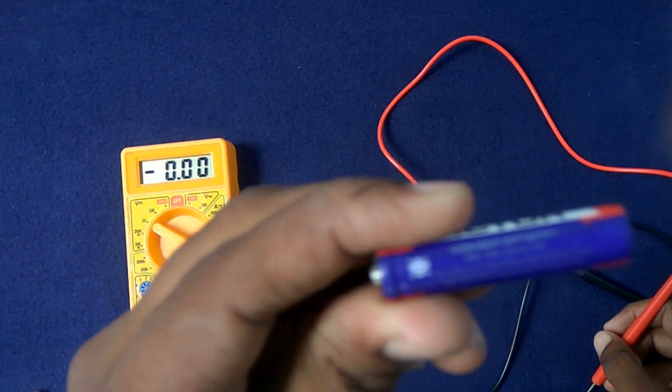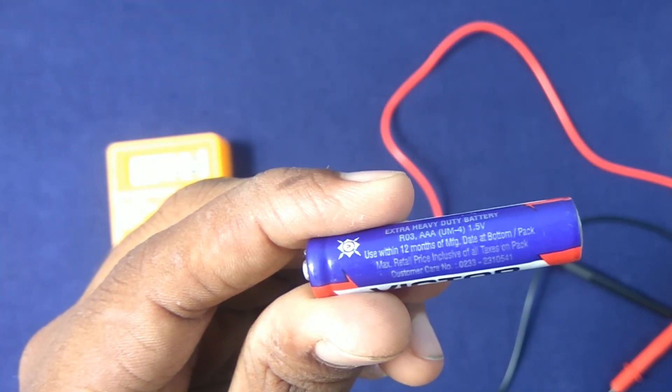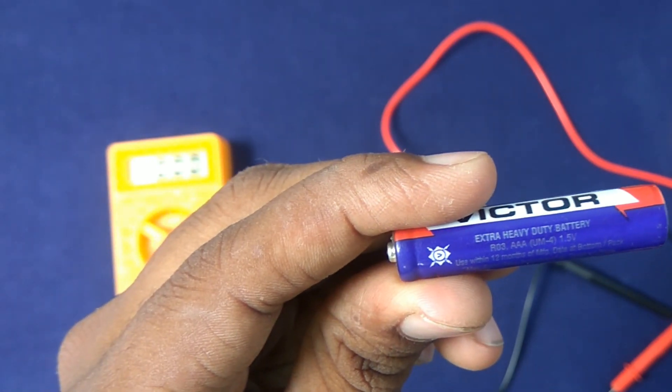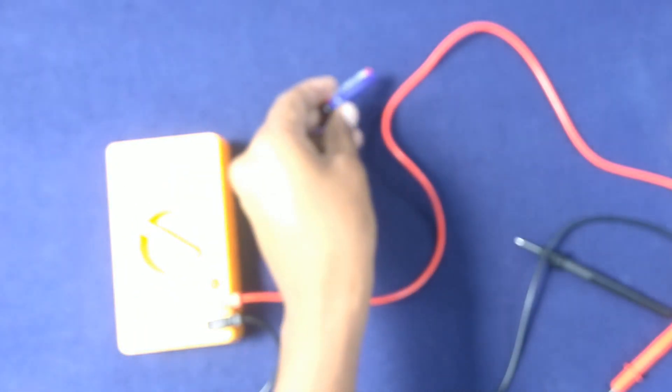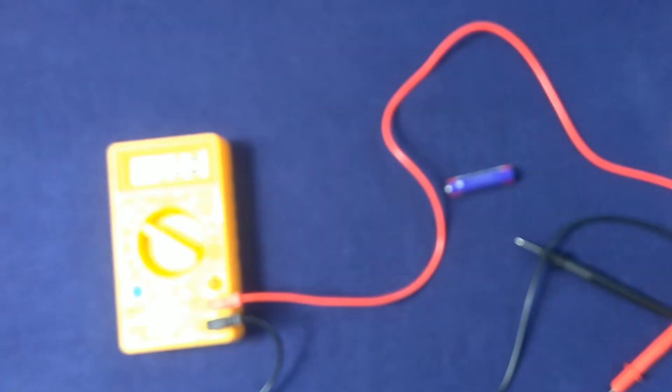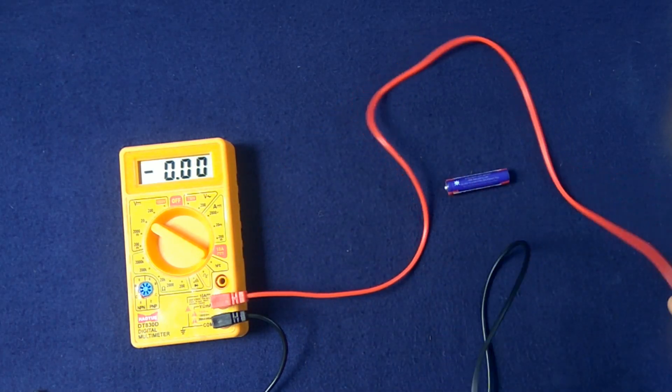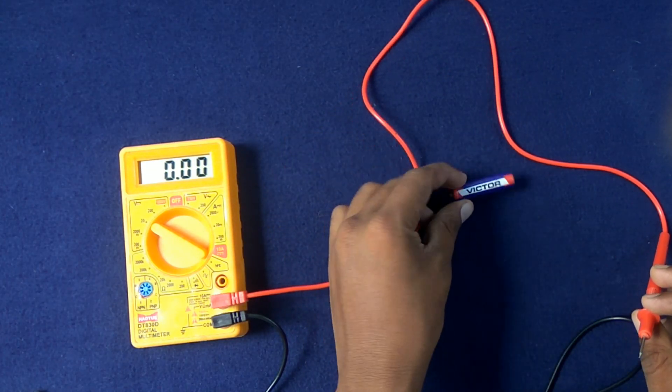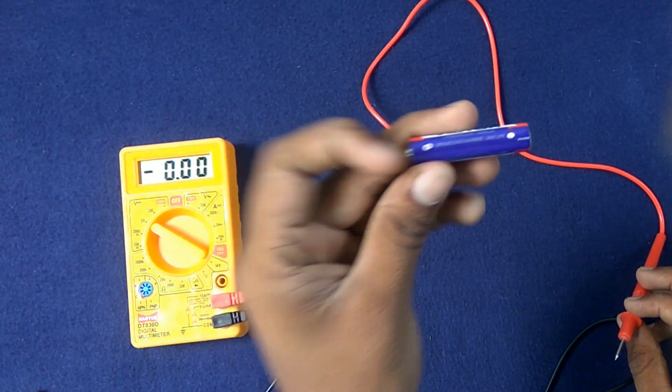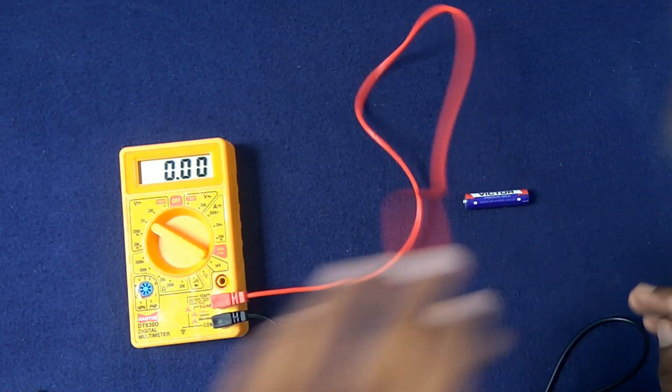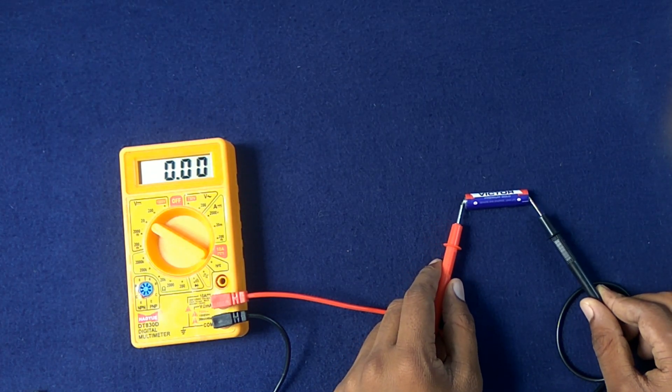Let's check this AAA battery which shows it gives an output of 1.5 volts. Let's put red on the plus side and the black on the minus side.